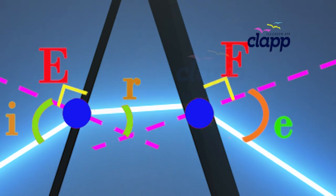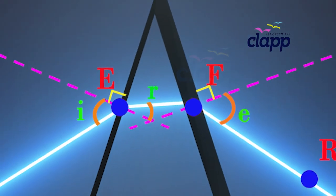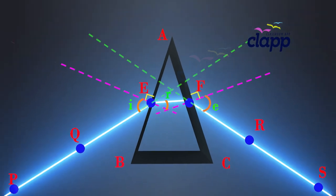Compare the angle of incidence and the angle of refraction at each refracting surface of the prism. Is this similar to the kind of bending that occurs in a glass slab? The peculiar shape of the prism makes the emergent ray bend at an angle to the direction of the incident ray. This angle is called the angle of deviation. In this case angle D is the angle of deviation.